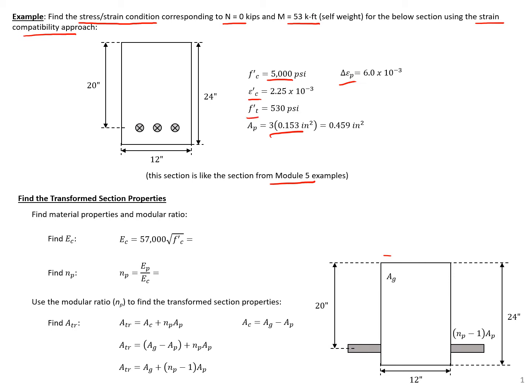The first thing we need to do is find the transformed section properties, starting with the modulus of elasticity for our concrete. Using the ACI expression, we have 57,000 times the square root of 5,000 PSI, divided by 1,000 pounds per kip to convert to KSI, giving us a value of 4,030 KSI.